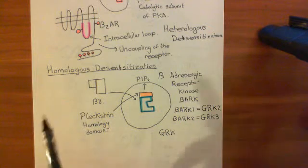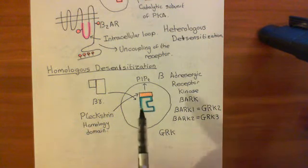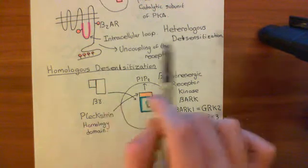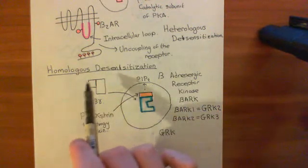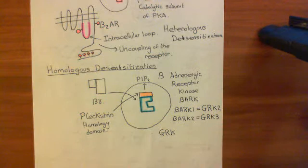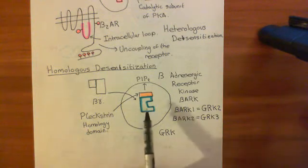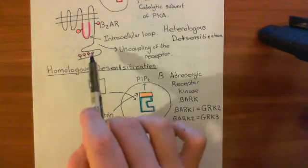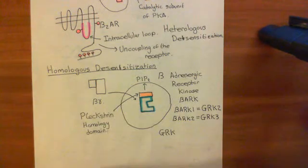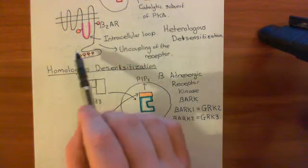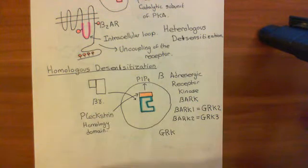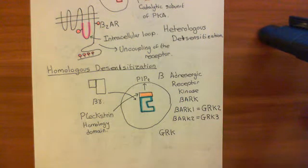We're now going to see homologous desensitization. The reason it's different from heterologous desensitization is that it will only act on receptors which actually have the agonist — in this case adrenaline — bound to them. This beta-adrenergic receptor kinase will only phosphorylate beta-2 adrenergic receptors which have the agonist bound, adding phosphate groups onto the late carboxyl terminus only if the agonist is actually bound.